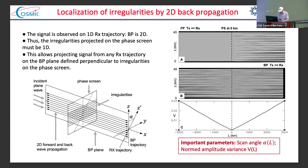That means the irregularities projected on the phase screen must be one-dimensional, which allows projecting the signal from any receiver trajectory onto the backpropagation plane defined perpendicular to irregularities on the phase screen. The right panel shows very simple modeling: a plane wave in the top panel propagating from left to right, a phase screen in the center, then phase and amplitude fluctuations. Grayscale shows amplitude fluctuations that develop after the screen. When we apply wave propagation from right to left, they reduce to the screen and then increase again. So if we calculate the amplitude variance as a function of distance, the position of the phase screen modeling the irregularities is determined by the minimum of that amplitude variance.